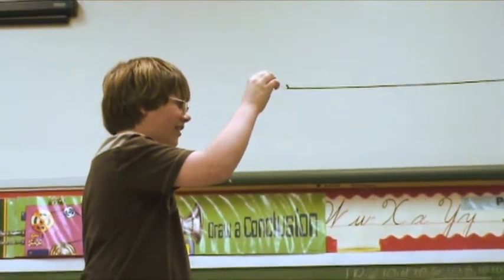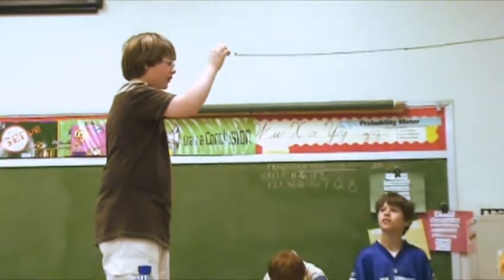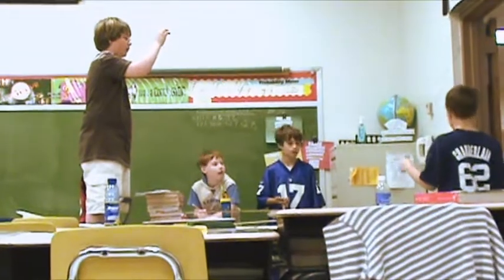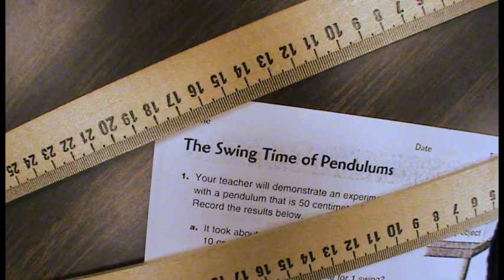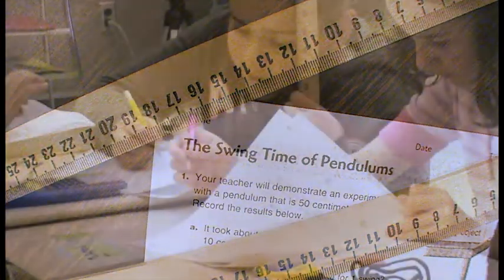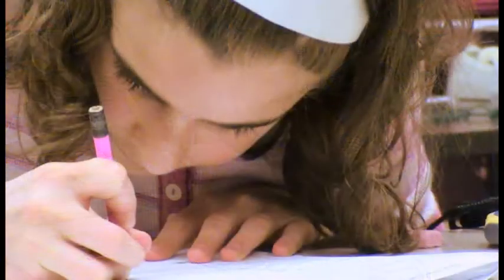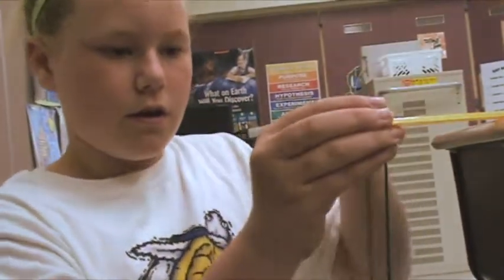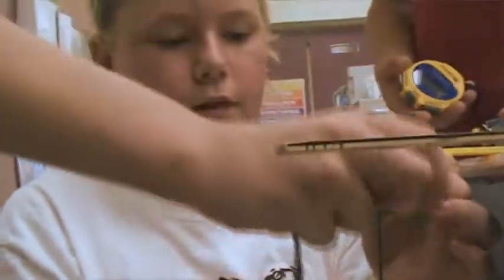Today's lesson, we were trying to see if the length of string — the weight on the pendulum — affected how long it took to swing from one side to the other. It also had a lot of other things in there: they were doing some graphing, filling in different kinds of charts, and also rounding, so it covered a lot of different things all in one lesson.